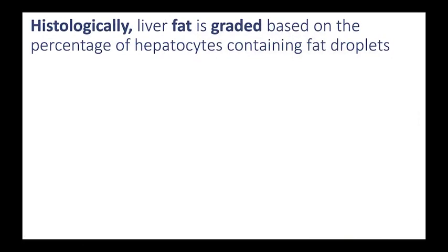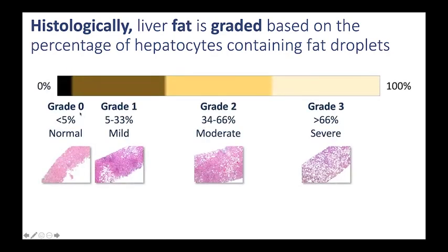Histologically, liver fat is graded based on the percentage of hepatocytes containing fat droplets, and there are four grades of steatosis. Grade 0, less than 5%, is considered normal. Grade 1, mild, is 5 to 33% of hepatocytes containing fat. Grade 2, moderate, is 34 to 66% of hepatocytes. And grade 3, severe, is over 66% of hepatocytes containing fat droplets. So histologically, liver fat can range from 0% — not a single hepatocyte contains a fat droplet — all the way to 100%, where every single hepatocyte contains at least one fat droplet.